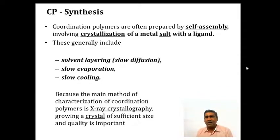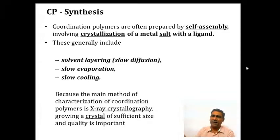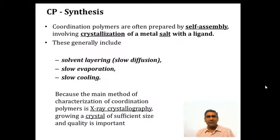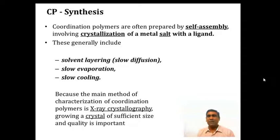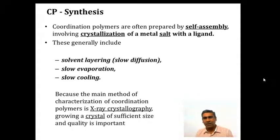Synthesis methods generally include solvent layering, that is the slow diffusion method, where you keep the metal-ligand solution and allow slow diffusion with another solvent. The next method is slow evaporation, where you keep it aside for a long time, it slowly evaporates and you get a crystal. Slow cooling also yields this type of coordination polymer. The main characterization method is X-ray crystallography — single crystal XRD — so growing a crystal of sufficient size and good quality is very important.